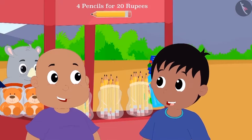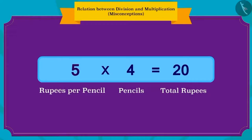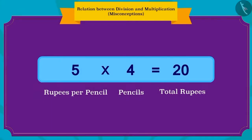Raju said to Bablu that he can write this multiplication another way also: 5 rupees per pencil and 4 pencils, so the total amount is 20 rupees. Children, has Raju written it correctly? Yes, he has. Raju has written this correctly. We can write any kind of multiplication in two ways.